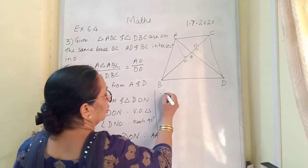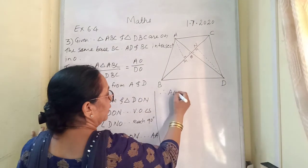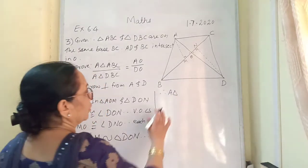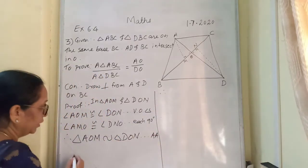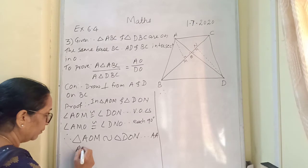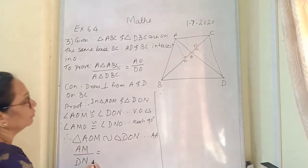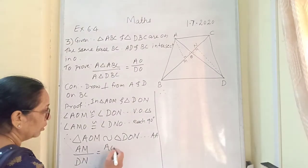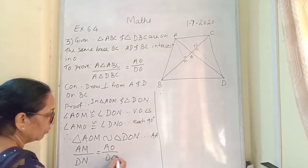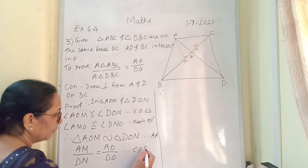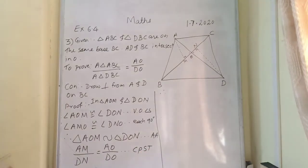Therefore, first similar we have shown, therefore AM upon DN is equal to AO upon DO. The reason will be CPST. Correct? Corresponding parts of similar triangles.